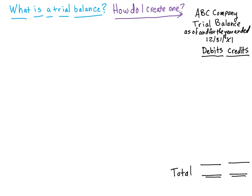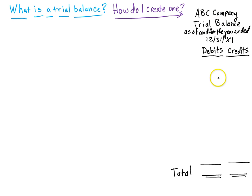All a trial balance is, is a listing of every account that a company has in its respective balance as a debit or credit. We title it a trial balance and specify the period it's for. I'm going to take all the debits, add them up and get a total, all the credits, add them up and get a total, and the debits should equal the credits because all of our transactions up until now have had debits equaling credits, so they should stay in balance.